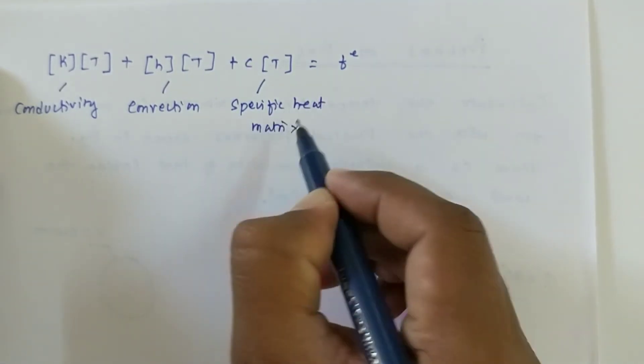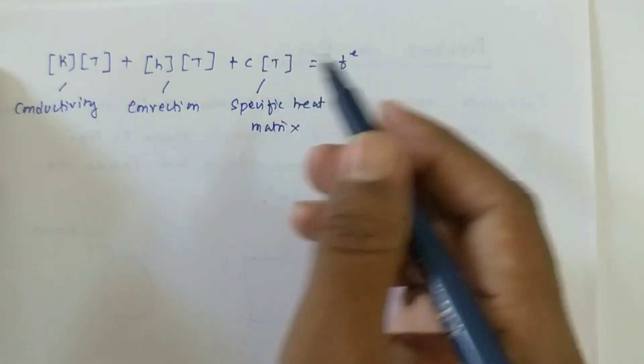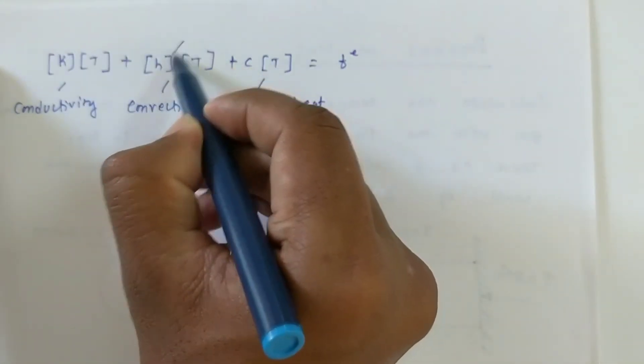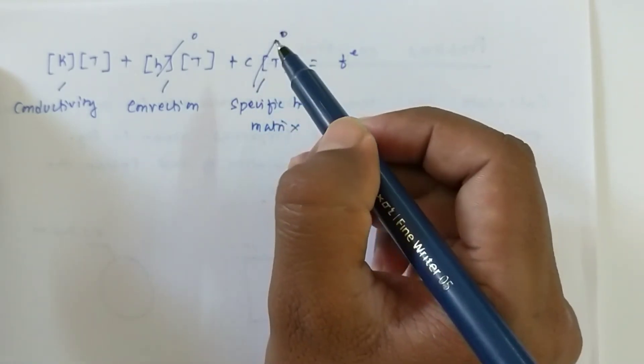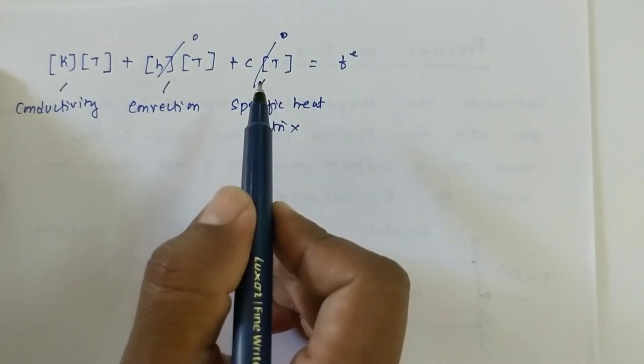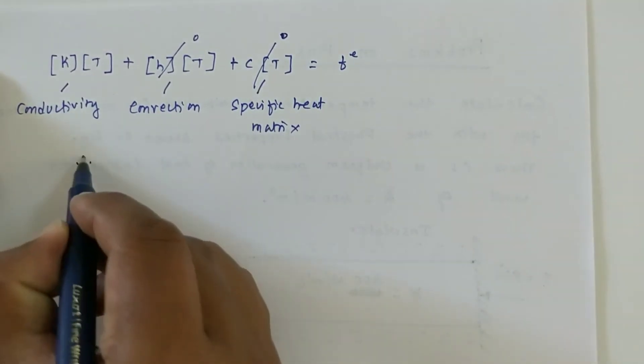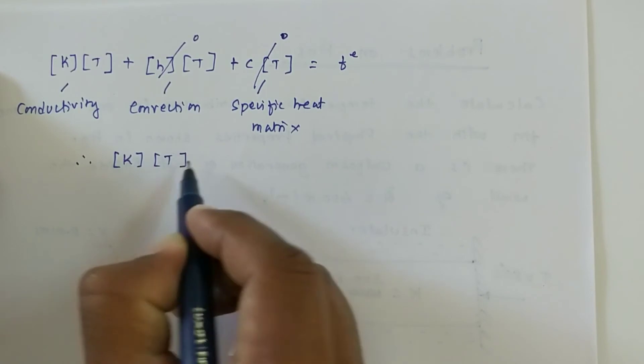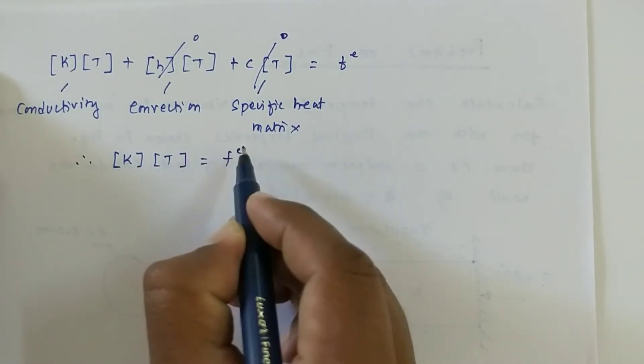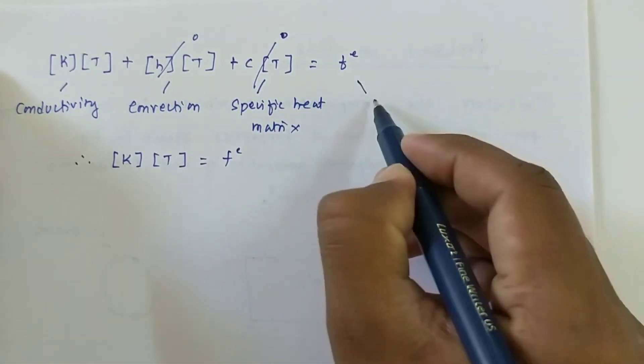This is a general representation for a thermal element. Since there is no convection this can be treated as 0 and there is no specific heat matrix, even this can be treated as 0. By keeping this in mind, we can formulate K times T equals F, which is the global force vector.